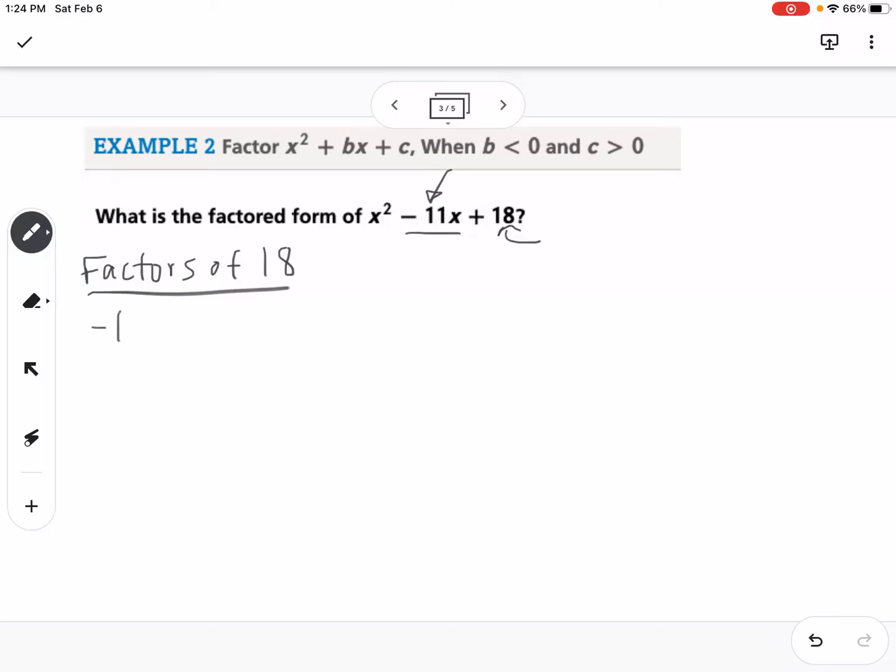So we could have negative 1 times negative 18. We could have negative 2 times negative 9. We could have negative 3 times negative 6. So those are my factors of 18, and I think okay, which pair will add up to negative 11? That would be negative 2 and negative 9. So I would write this as x minus 2 times x minus 9.